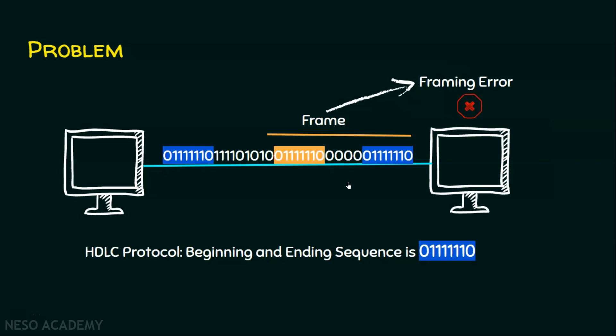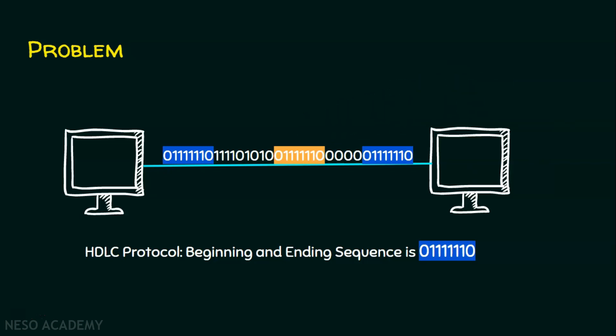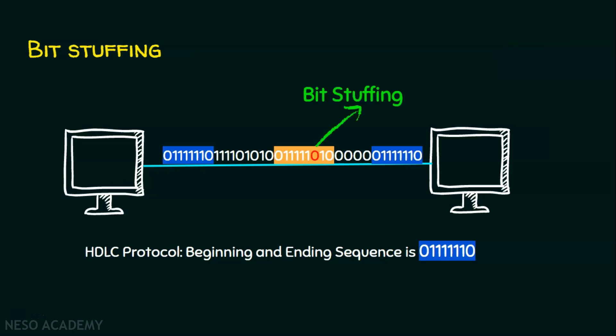The solution for this problem is bit stuffing. What we are going to do is stuff a bit: when we encounter five consecutive ones, a zero is going to be stuffed after those five consecutive ones. If the sender is receiving data from the upper layer and sees five consecutive ones, it stuffs a zero after the fifth consecutive one, and the problem is resolved. The receiver knows the beginning and ending sequences. When it sees the data part and finds a zero after five consecutive ones, it removes that zero and constructs the original data. So the process of inserting a zero after five consecutive ones is bit stuffing — the sender performs bit stuffing, and the receiver undoes it.